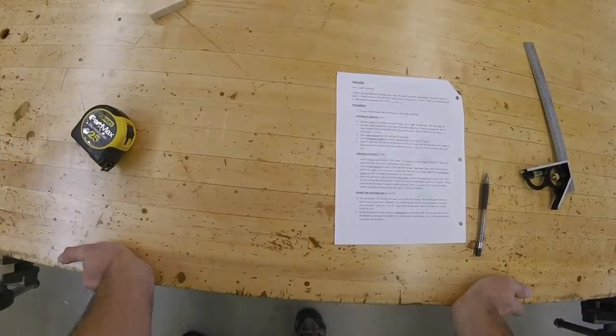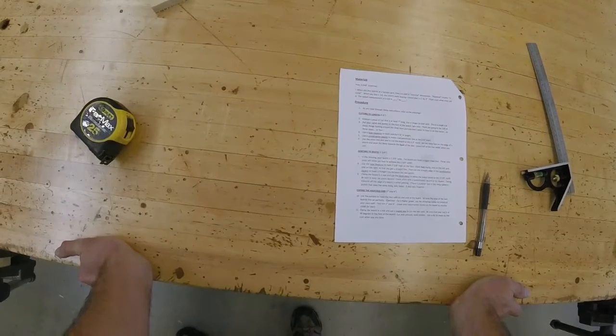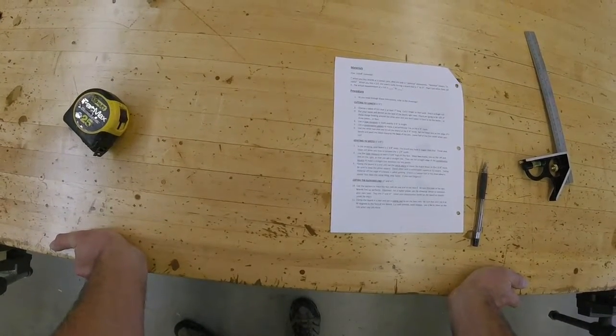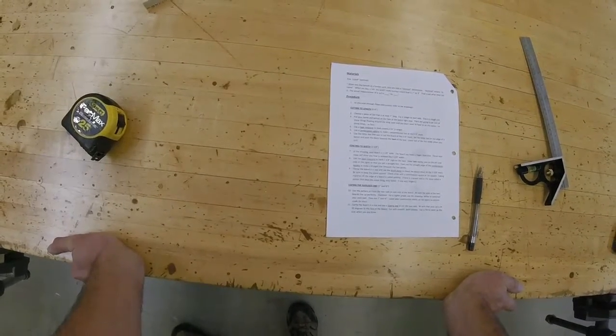Be sure to keep the plane square. Check often with a combination square or tri-square. Taking material off the edge of a board is called jointing. There's a power tool in the shop called a jointer that does the same thing, only faster. It also eats fingers.